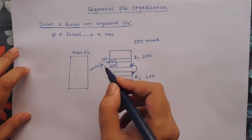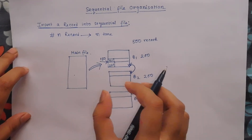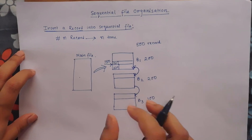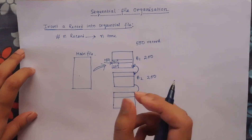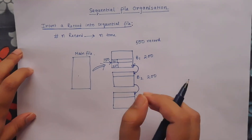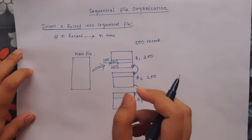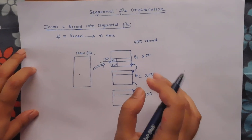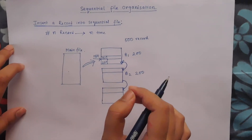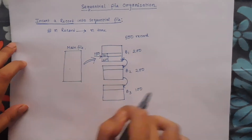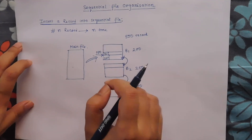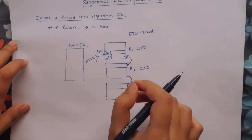This scenario is very complicated. In this situation, all the records change their positions. If you want to access some data from this file during insertion, it is not possible until the entire operation is complete. So these are the disadvantages of sequential file organization.